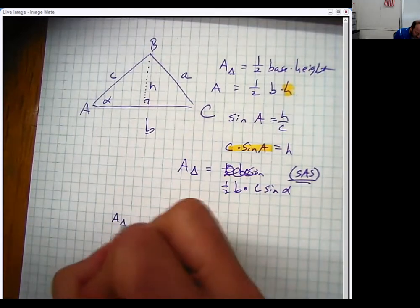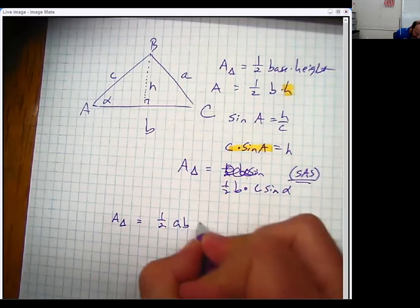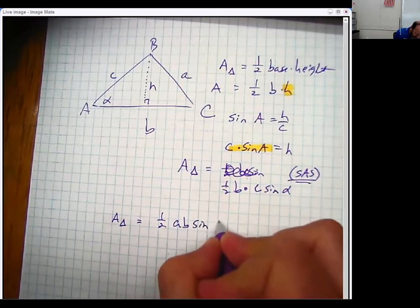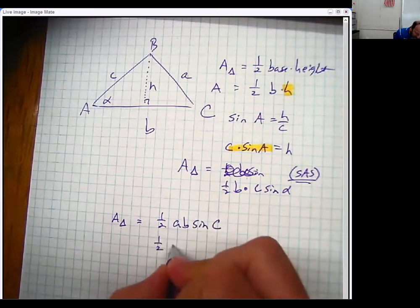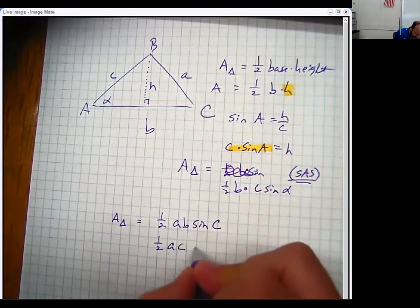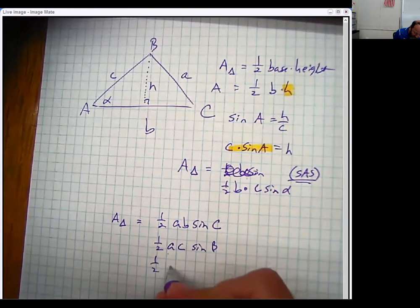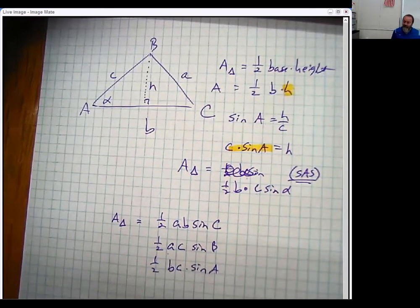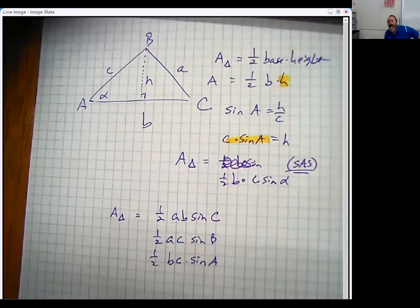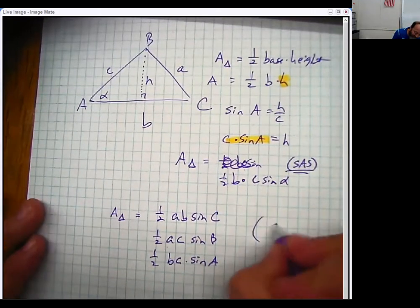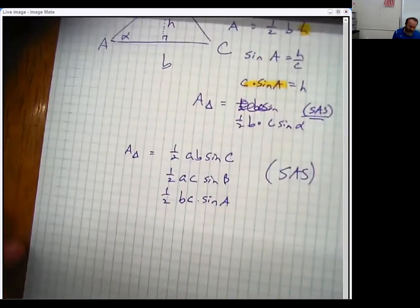So the area of the triangle could be one half A, B sine of the angle C. We could have one half A, C times the sine of angle B, or we could have one half B, C times the sine of the angle A. And you'll see people use Greek letters instead for those, but that kind of lays it out. But again, I'm beating on this. You have to have a side angle side.